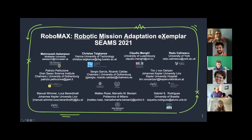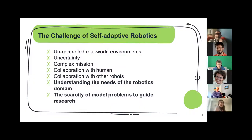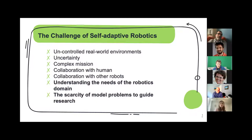Hi everyone, welcome to the speech for RoboMax — a robotic mission adaptation exemplar collection. I'm Mernush. The use of robotic applications is rapidly growing in many different domains, leading to more complex tasks that ask for more adaptability with various external factors such as human operators, other robots, or devices active in the environment, and the uncertainty of working in a dynamic operating environment. We need effective controller software that provides self-adaptability.